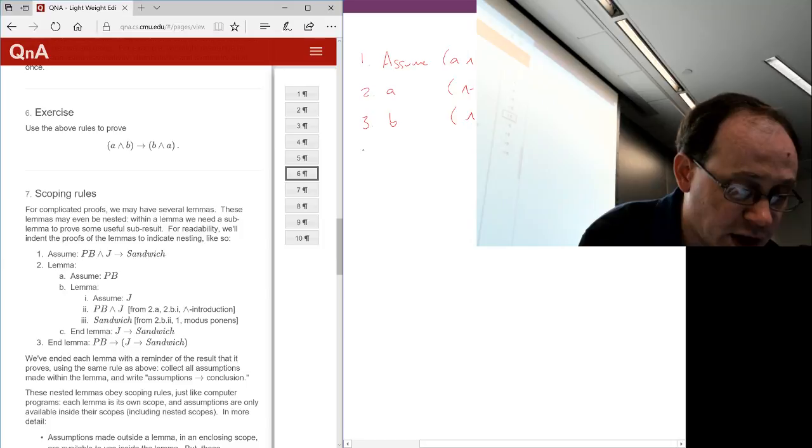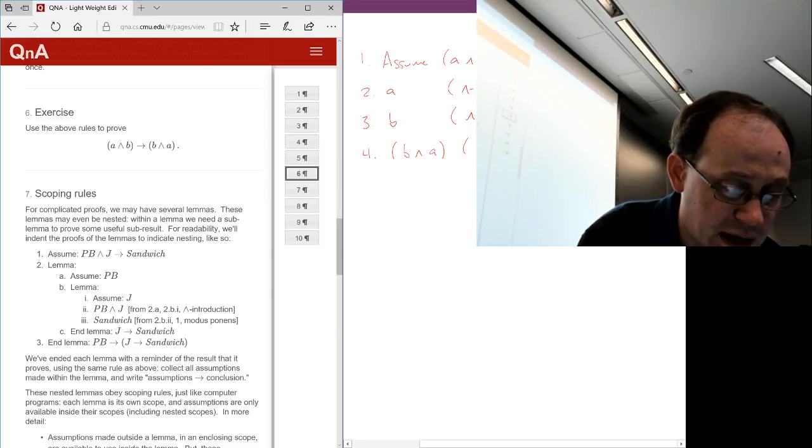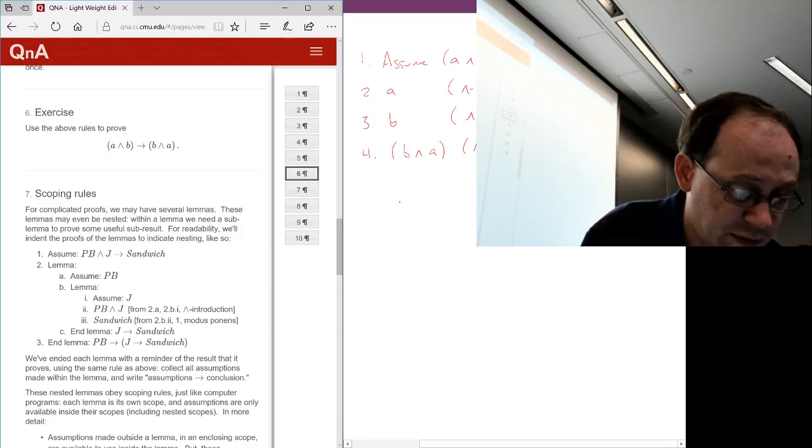And now we can do and-introduction, but we do it in the opposite order. So we'll take B and A, so 3 and 2, as our premises for and-introduction, with premises 3 and 2. And now we're done.